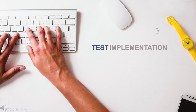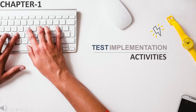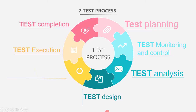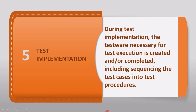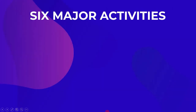In this lecture, we will cover test implementation activities. Test implementation is the fifth activity in the test process. In the previous lecture we saw that during test implementation, the work necessary for test execution is created or completed, including sequencing the test cases into test procedures. Now we will cover the six major activities of test implementation, as mentioned in the ISTQB syllabus.